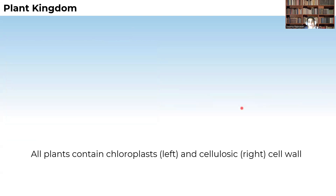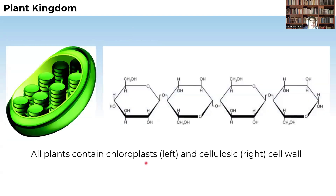The common characters of the plants are the presence of chloroplast, which is the organelle mainly responsible for the process of photosynthesis — that is, preparation of food material. This makes the plant autotrophic in nature. The cell wall of the plant is made up of cellulose. So a cellulosic cell wall and chloroplast are the characteristics of a plant cell.